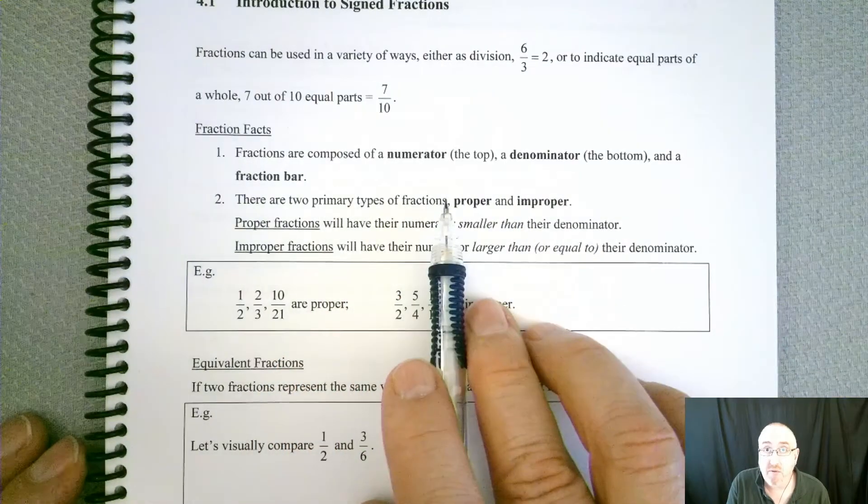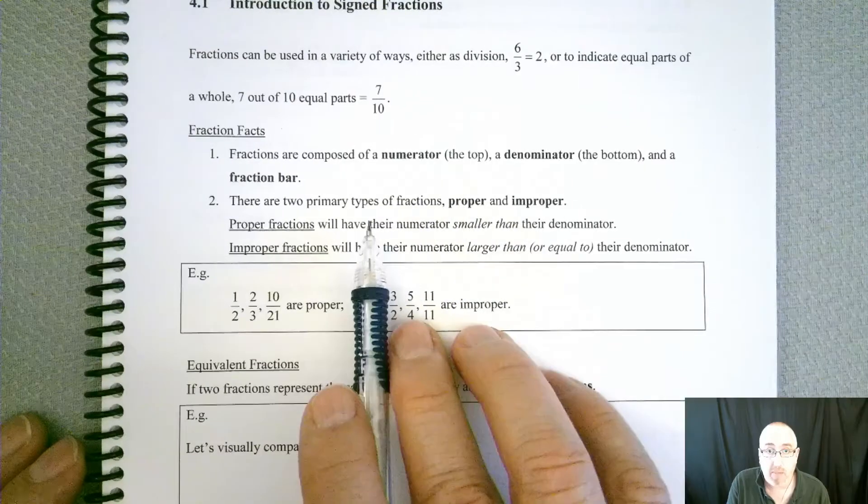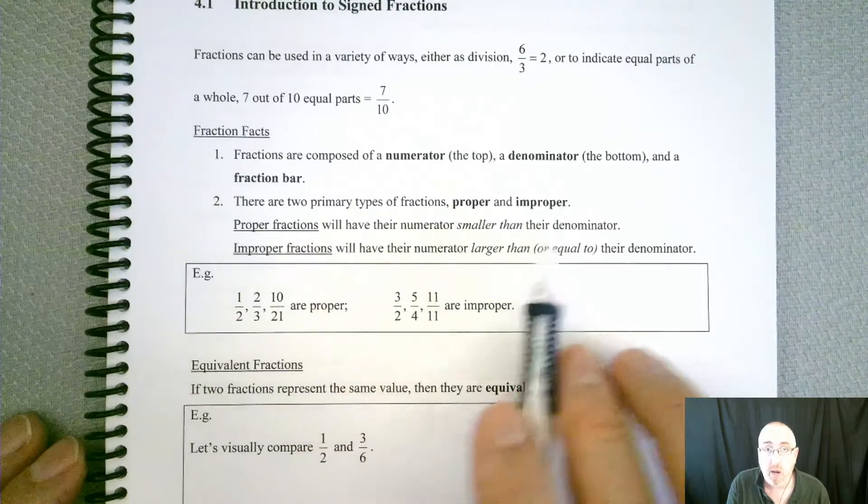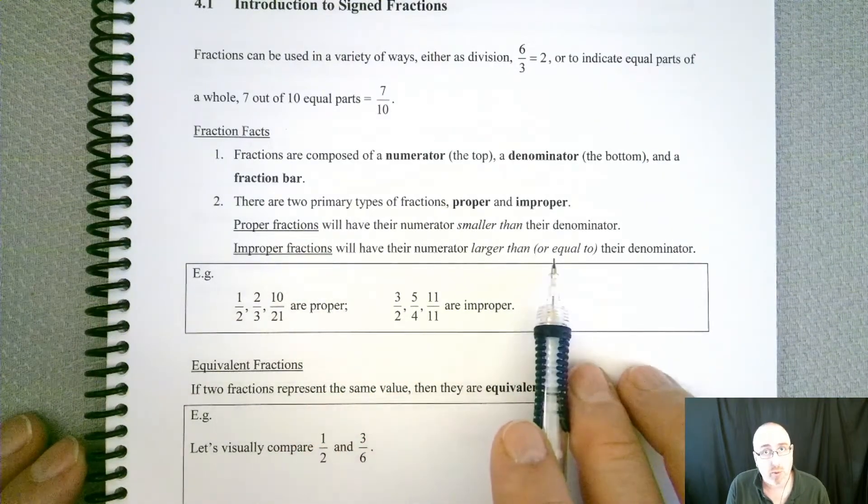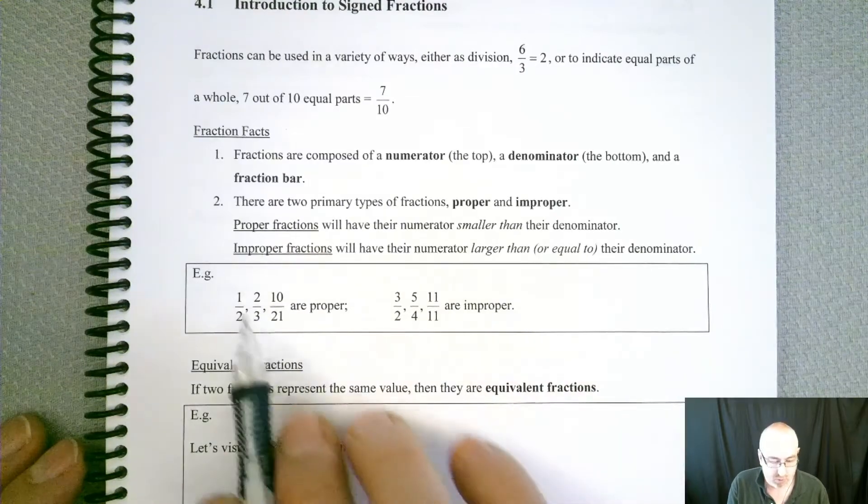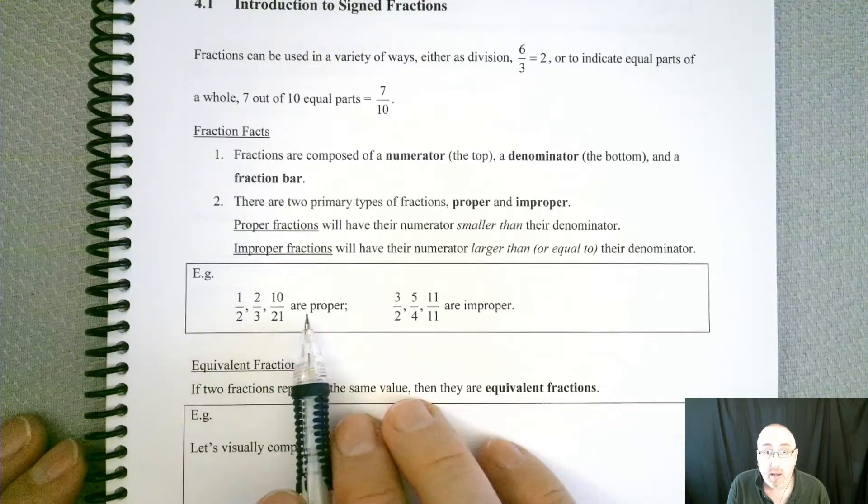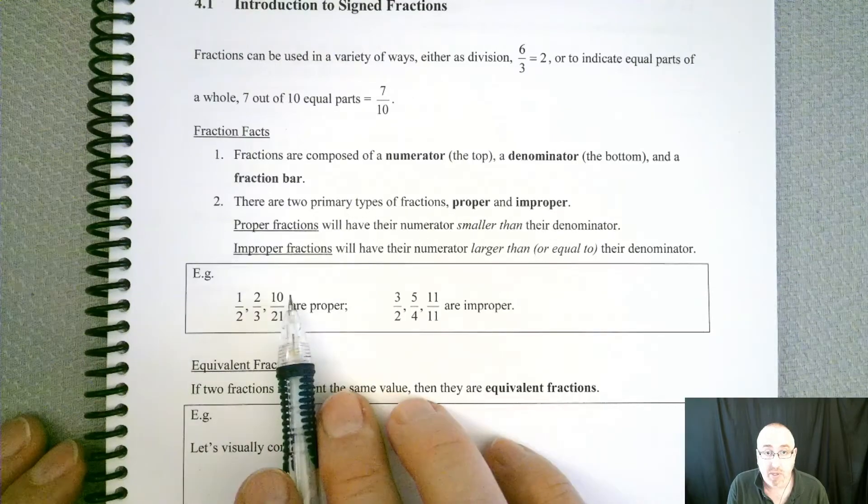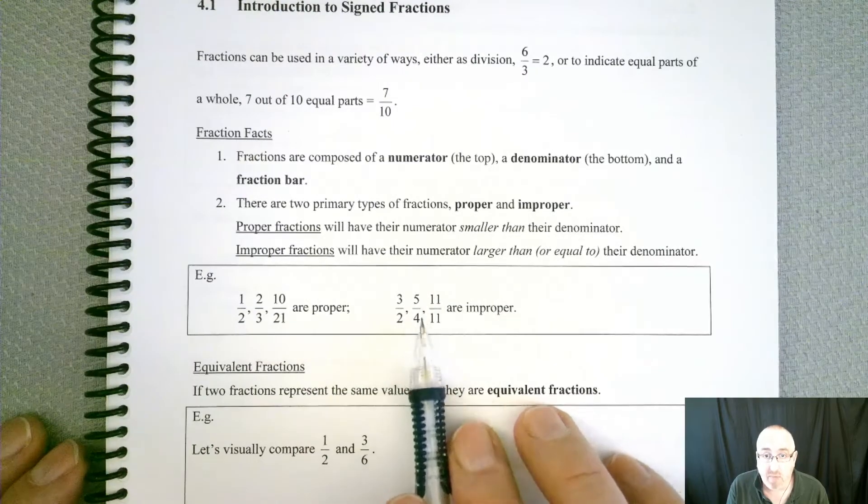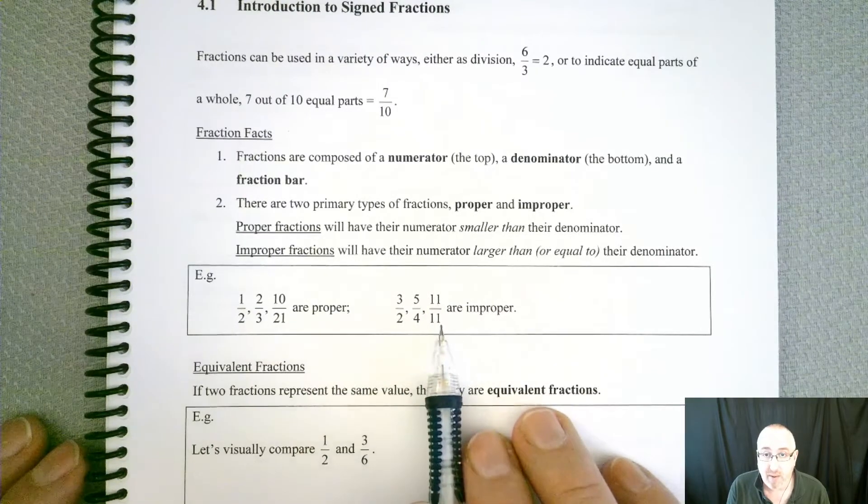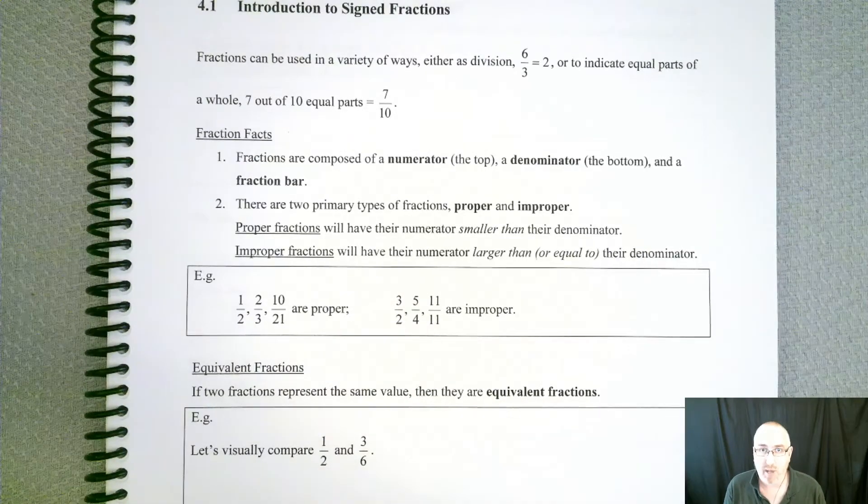There's two primary types of fractions: proper and improper. Proper fractions will have their numerator smaller than their denominator, but improper will have their numerator larger than or equal to their denominator. So we have 1/2, 2/3, 10/21 are all proper. The top is smaller than the bottom. But 3/2, 5/4, 11/11 would all be considered improper.